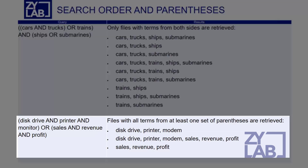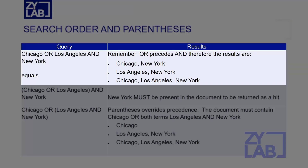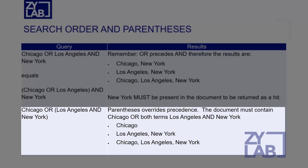In the following query, files with all terms from at least one set of parentheses are retrieved. In the first example, CHICAGO or LOS ANGELES and NEW YORK, the phrase NEW YORK must be present in the document to be returned as a hit. Whereas in the second example, the document must contain the term CHICAGO, or documents containing both LOS ANGELES and NEW YORK.